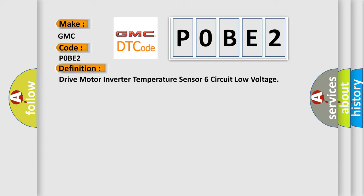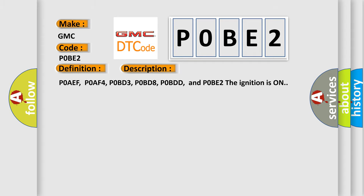And now this is a short description of this DTC code. P0AEF, P0AF4, P0BD3, P0BD8, P0BDD, and P0BE2: the ignition is on.